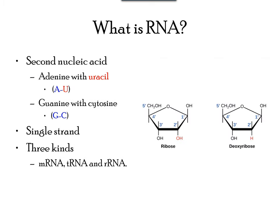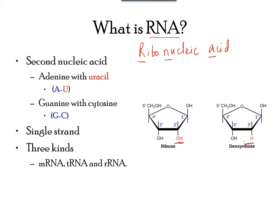Another kind of nucleic acid is called RNA. RNA is a polymer of nucleotides, also including a 5-carbon sugar — but ribose rather than deoxyribose, as notice the oxygen atom is not missing on carbon 2. It also has a phosphate group and nitrogenous bases. However, instead of thymine, it has another nucleotide called uracil (U). RNA exists as a single chain. There are three kinds of RNA molecules: messenger RNA, transfer RNA, and ribosomal RNA.